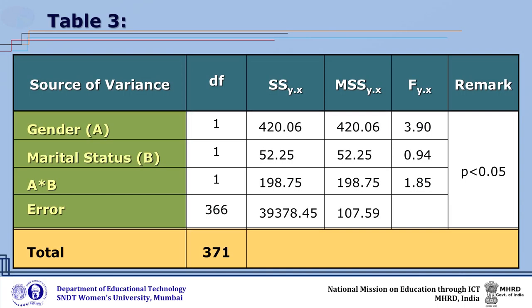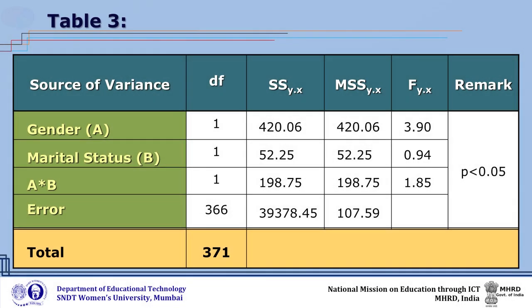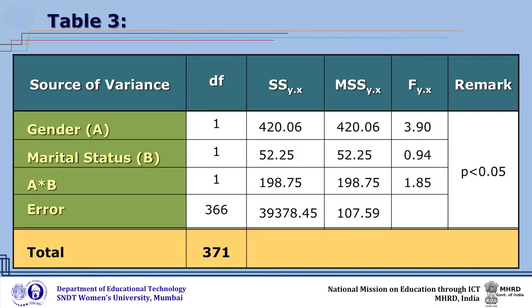From Table 3, the adjusted F value for marital status is 0.94, which is not significant. This shows that the adjusted mean scores of anxiety of single/unmarried and married teachers did not differ significantly when psychological risk factor and verbal intelligence were taken as covariates. Thus, the null hypothesis is not rejected, and anxiety of teachers was found to be independent of marital status when these covariates were considered.